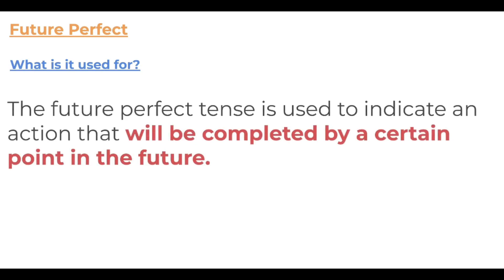So what is the future perfect and what is it used for? It's used for an action that will be completed by a certain point in the future. This idea of 'perfect' involves a timeline — something happening before another point — and it's in the future, so the tense expresses what's going to happen in the future.